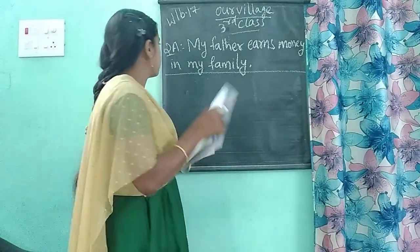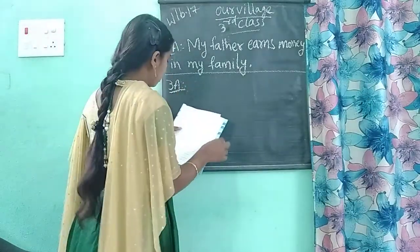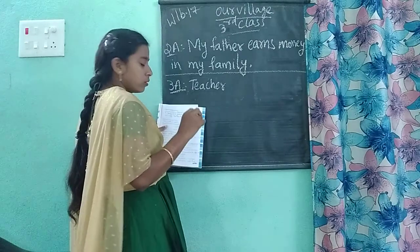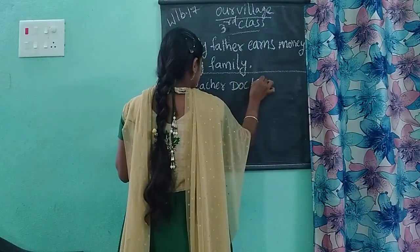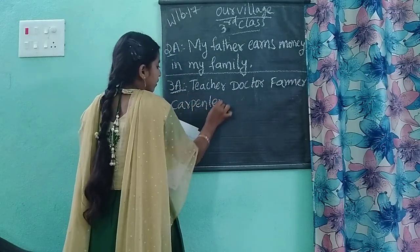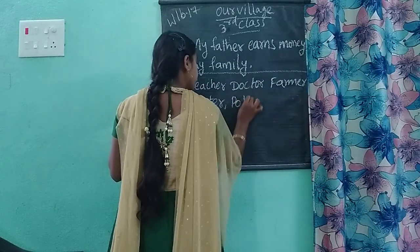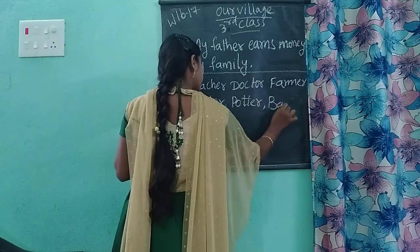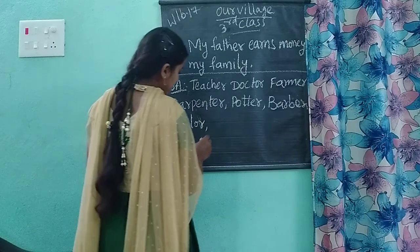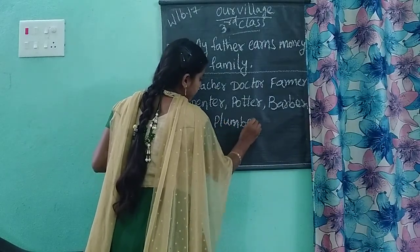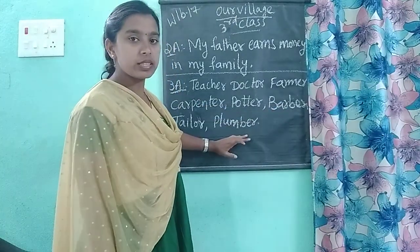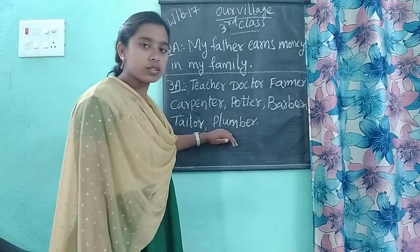For the third question answer, mention the different occupations you are aware of. The eight occupations are: teacher, doctor, farmer, carpenter, potter, barber, tailor, and plumber. All these are 8 occupations — write them in the 8 boxes for the third question answer.